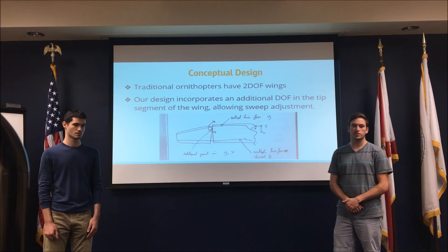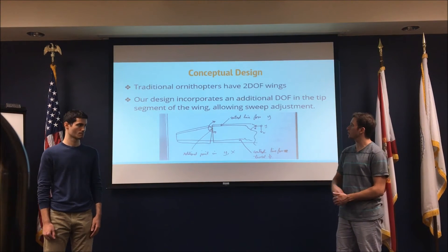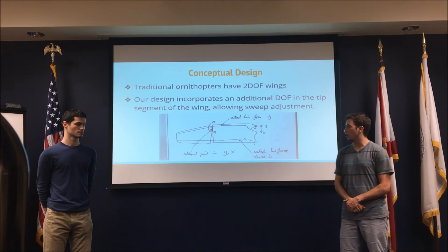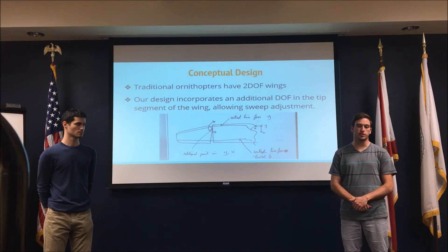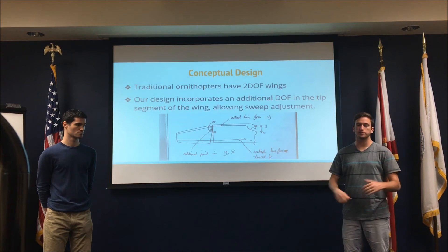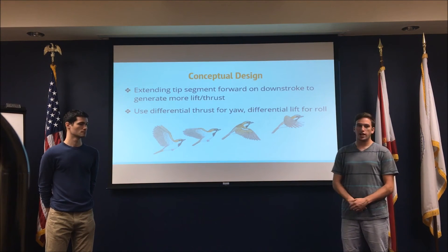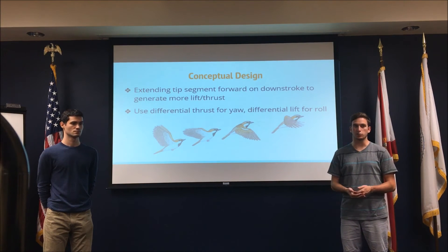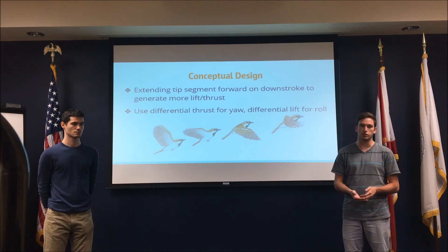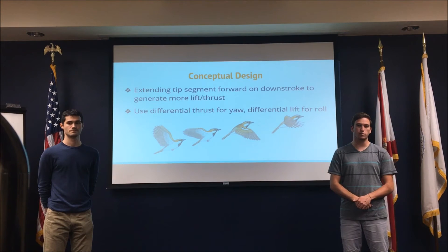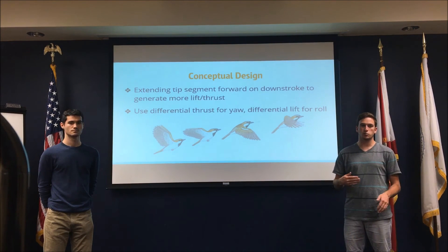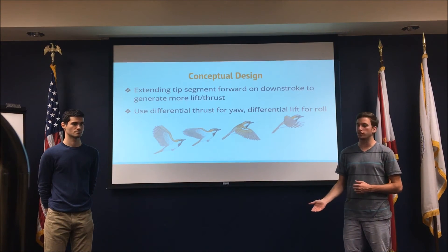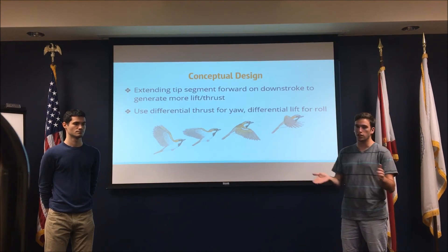For our conceptual design, we are utilizing an ornithopter wing with three degrees of freedom. Traditional ornithopters have two degrees of freedom: flapping about the body axis, and rotation about the leading edge to introduce angle of attack. We chose a three-degree-of-freedom rotational joint in the tip segment of the wing to allow sweep adjustment as well. When birds fly, they tend to extend their wings forward on the downstroke, which increases the apparent velocity of the wind, increasing the pressure differential and thus the thrust and lift generated. By controlling the sweep of the wing in real time during the downstroke, we can produce differing amounts of thrust or lift, using this to augment control through differential thrust or lift on each side of the ornithopter.